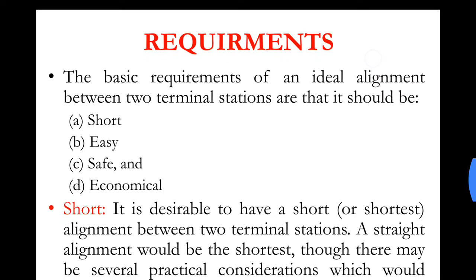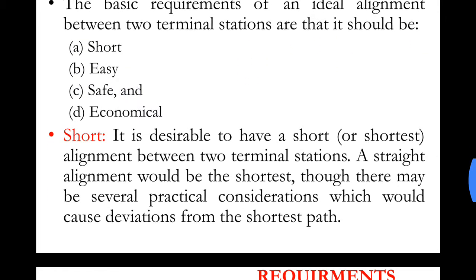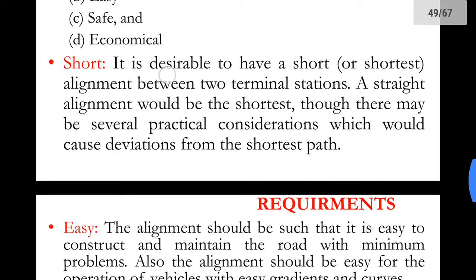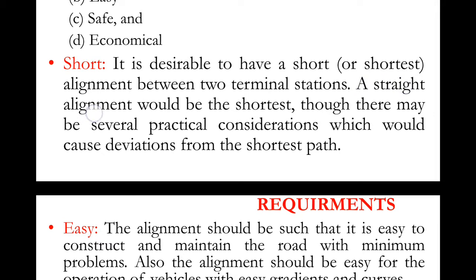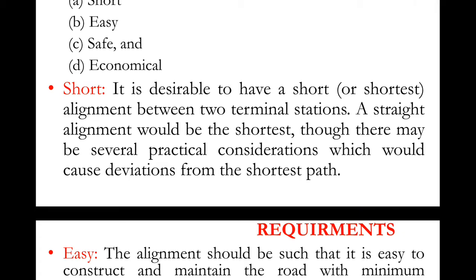The requirements of an ideal alignment between two terminal stations are that it should be short, easy, safe, and economical. By 'short,' it is desirable to have the shortest alignment between two terminal stations — ideally a straight line between points A and B, though practical considerations may cause deviations from the shortest path. A straight road provides the least distance and therefore the least construction cost.